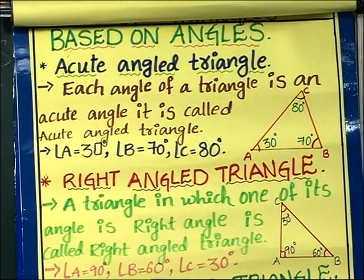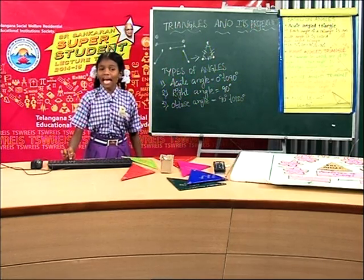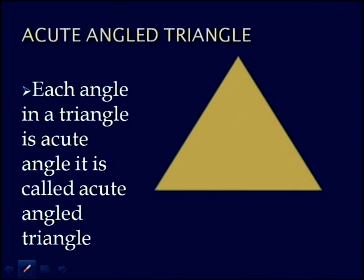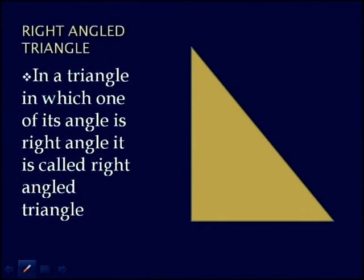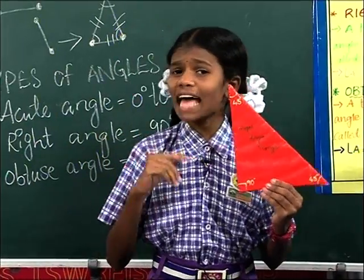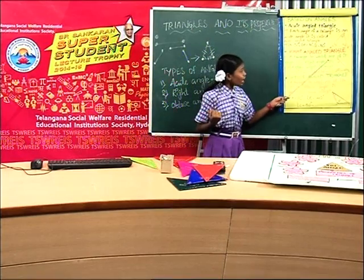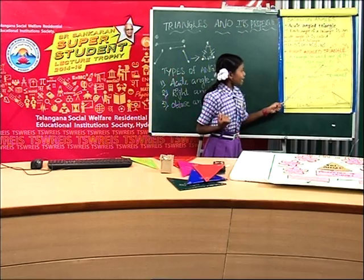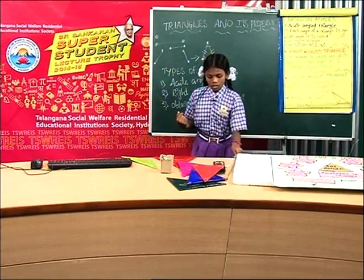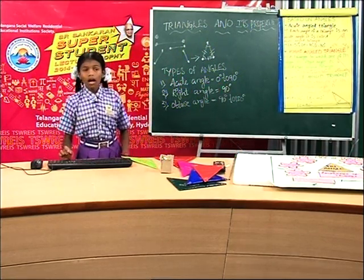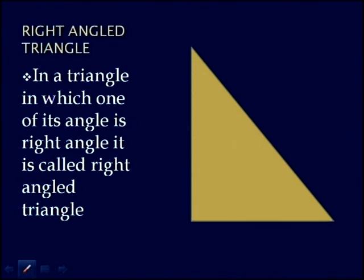Now I would like to show on the screen based on angles. Acute angled triangle: each angle in a triangle is an acute angle; it is called an acute angled triangle. This is the picture of an acute angled triangle. And now, right angled triangle: in a triangle in which one of its angles is a right angle, it is called a right angled triangle.